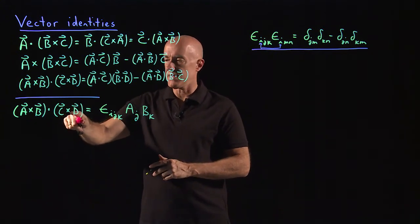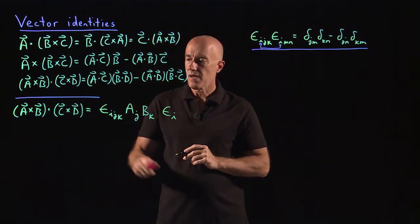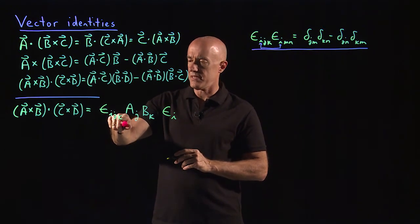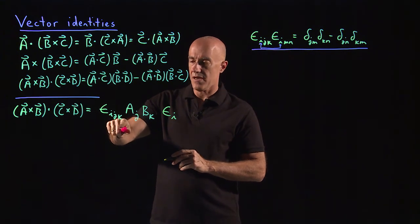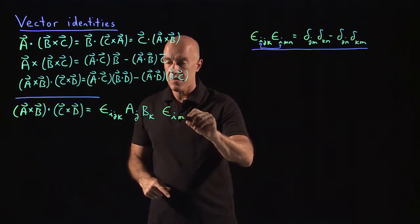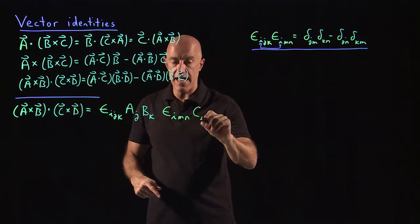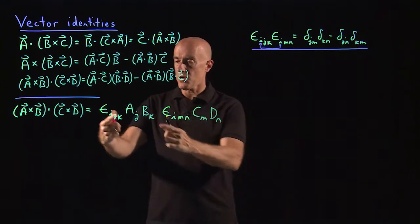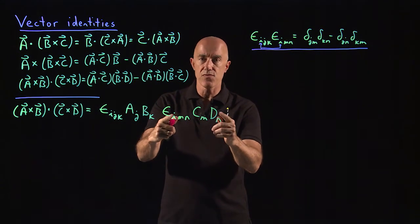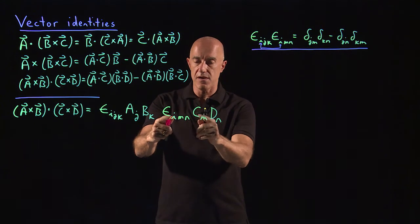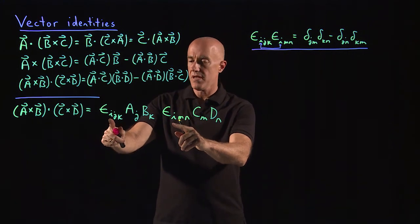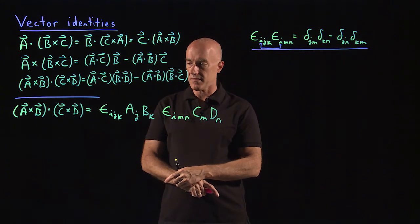And then we're dotting it into C×D. So we need also the i-th component of C×D. So the i-th component of C×D is epsilon_i... I cannot reuse the j, k index because I used it once already. So I need two new indices. So i, j, k, and then l, m, n. So let's use m and n. So I have epsilon_imn, and then c_m, d_n. So this first three terms here is the i-th component of A×B. The last three terms here is the i-th component of C×D. And the i here is contracted. So the i is summed over. And that gives us the dot product.